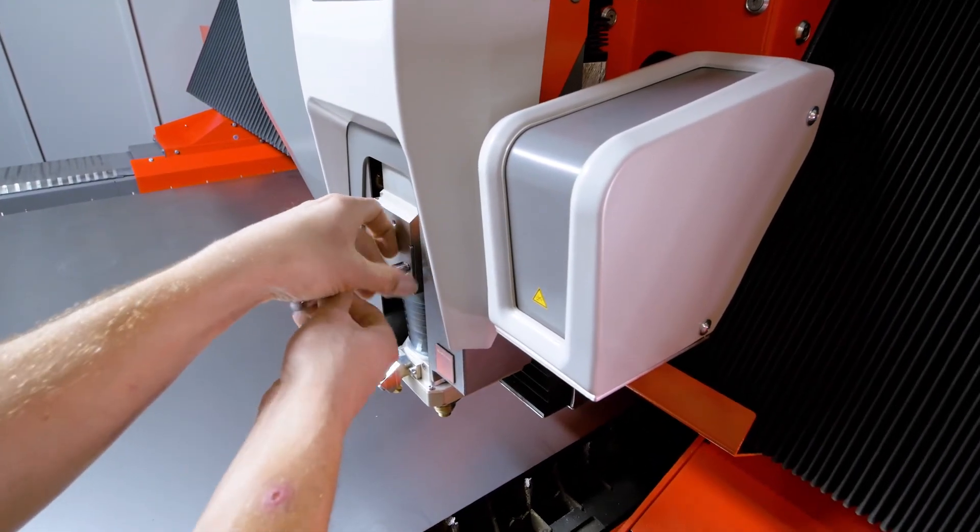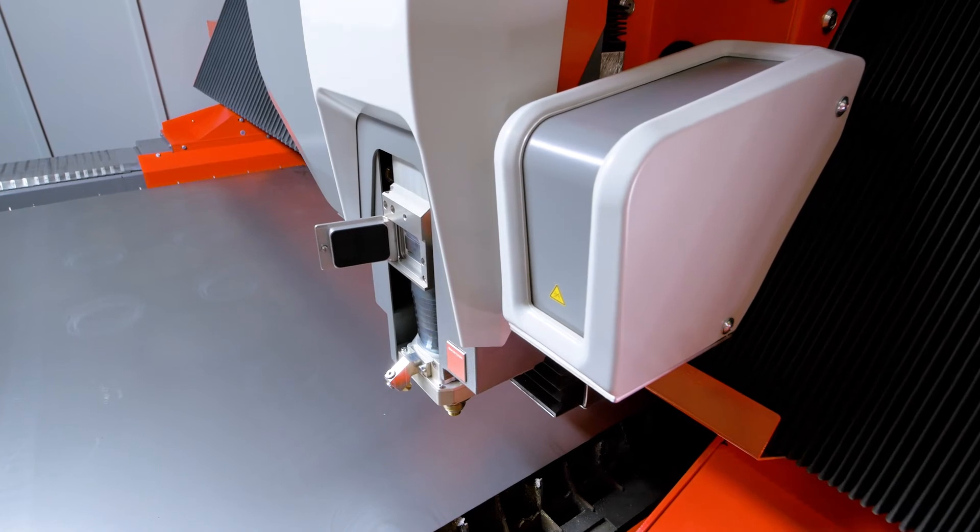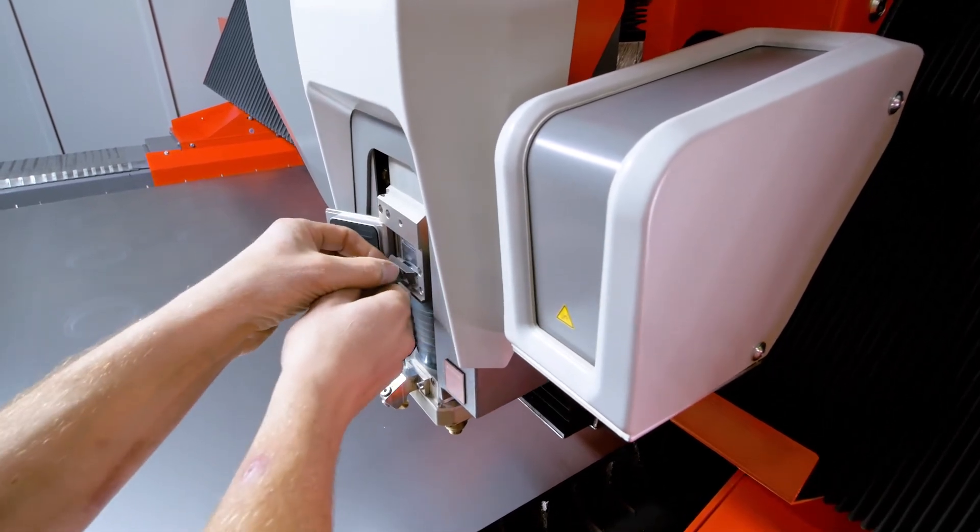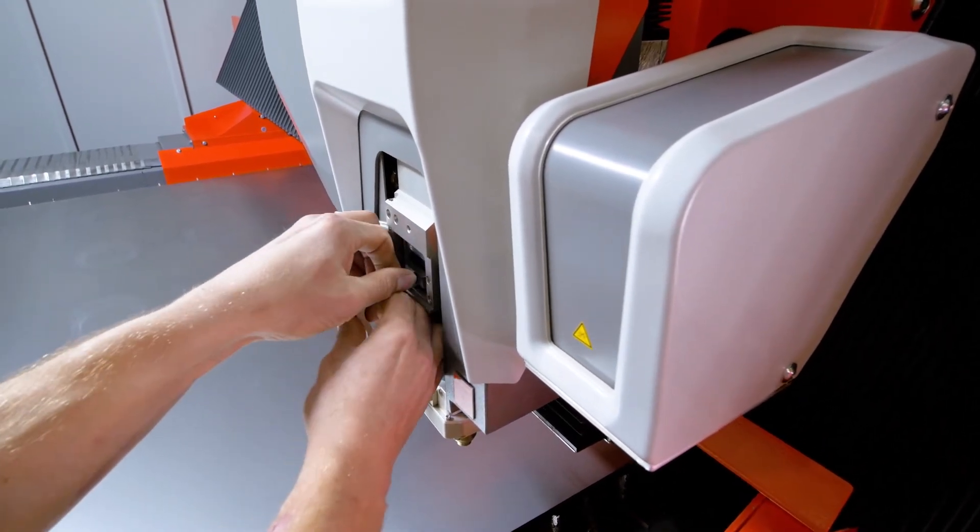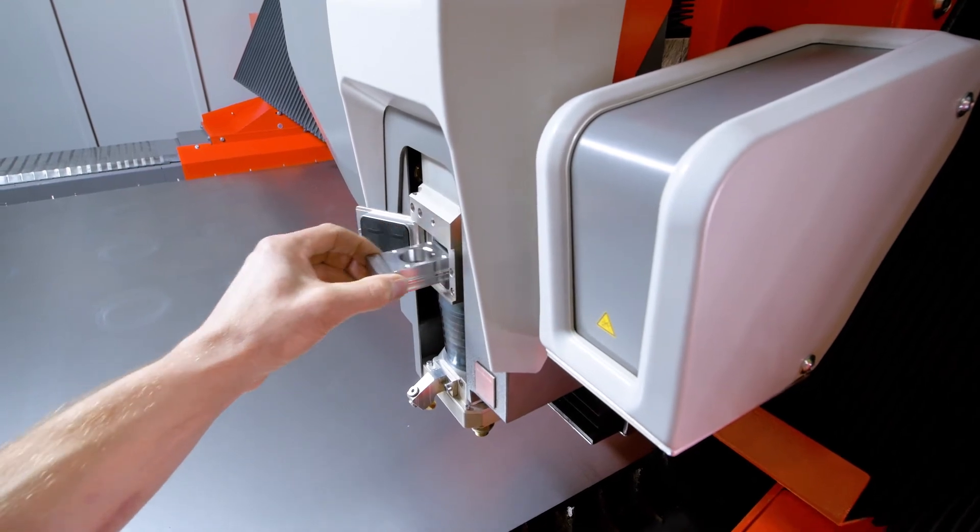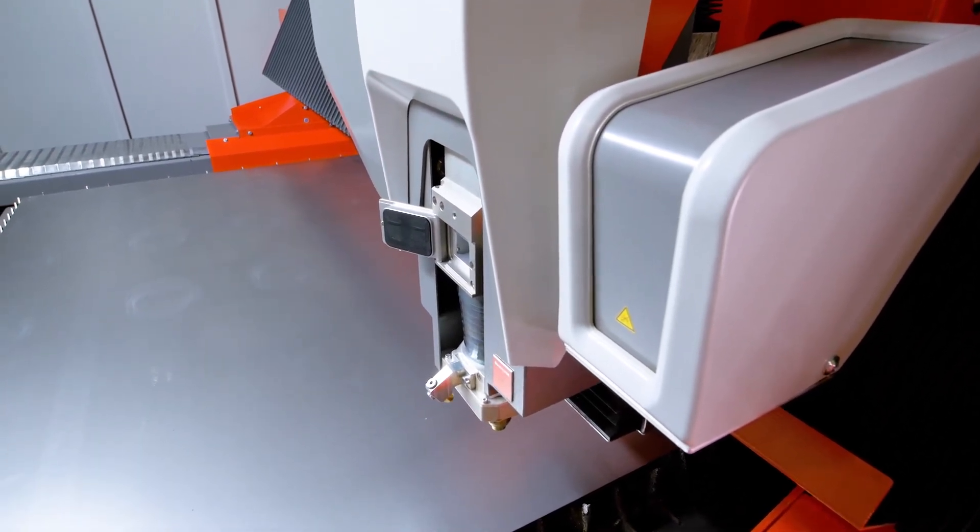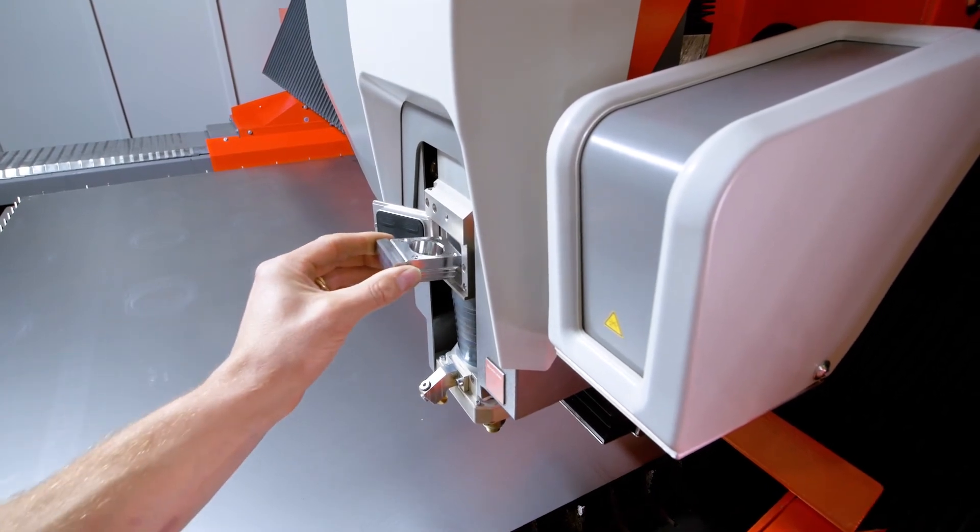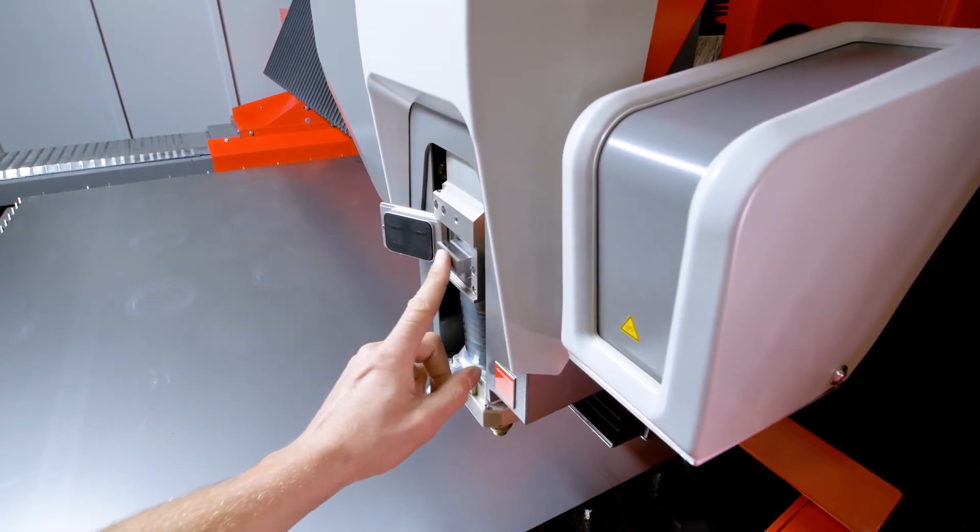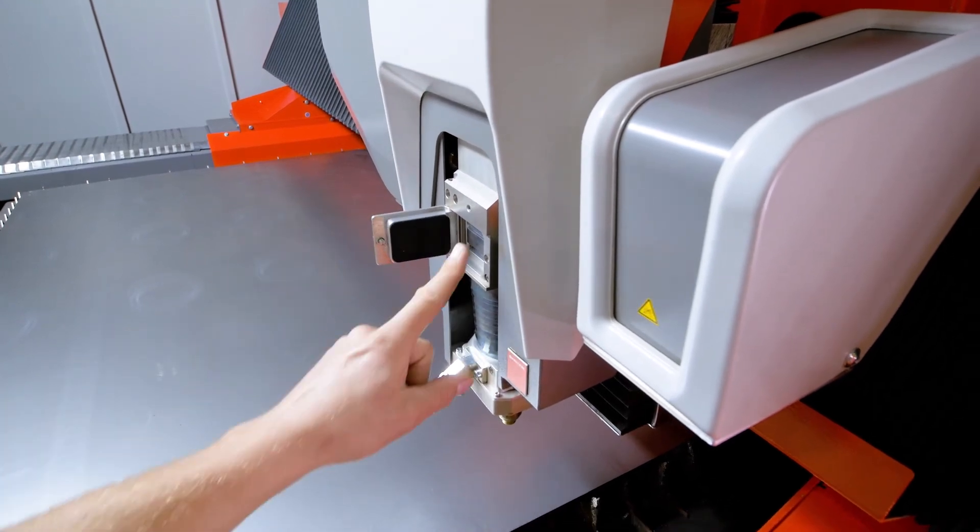We are opening this front door to replace the protective glass. We take out this protective glass cartridge and we bring in a new one. You get always two of those cartridges with each machine. It's quite easy to replace.